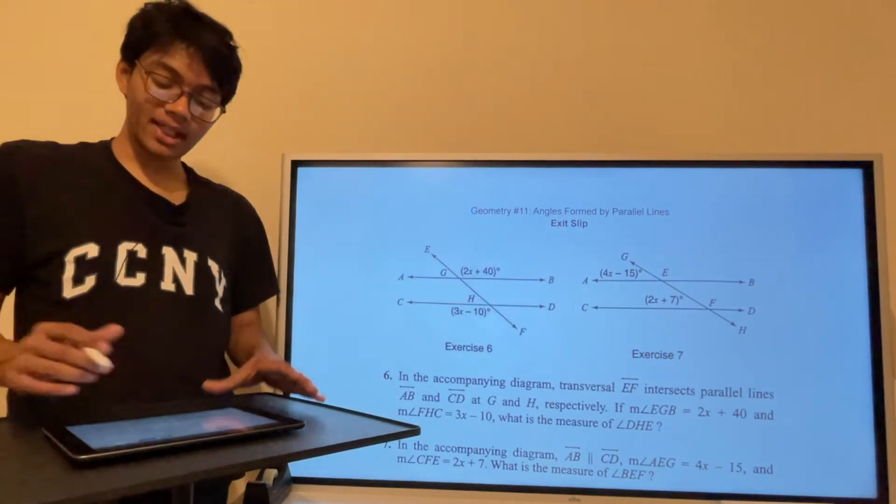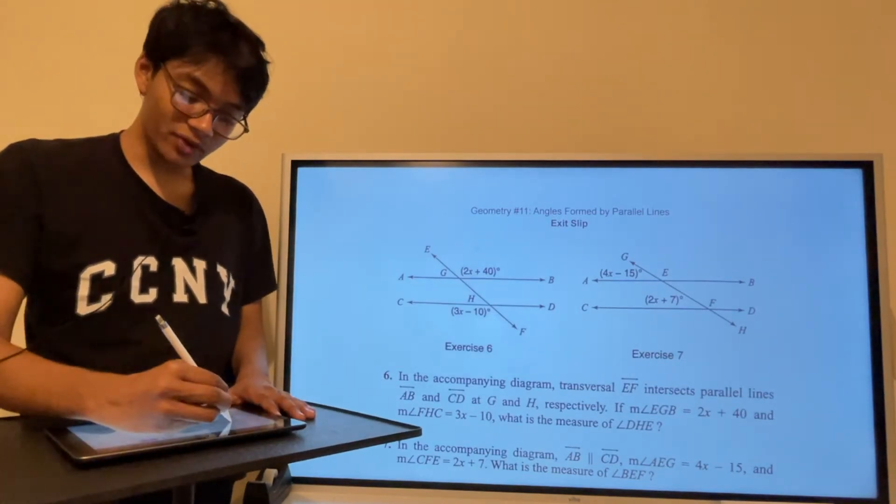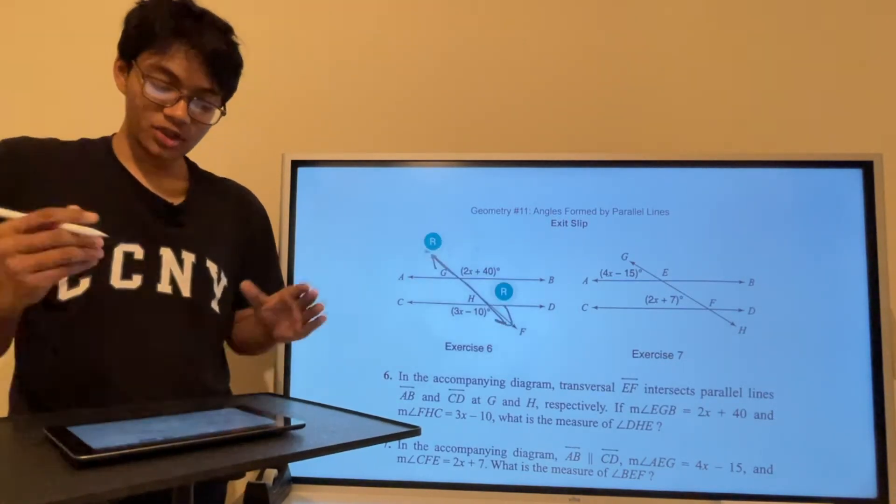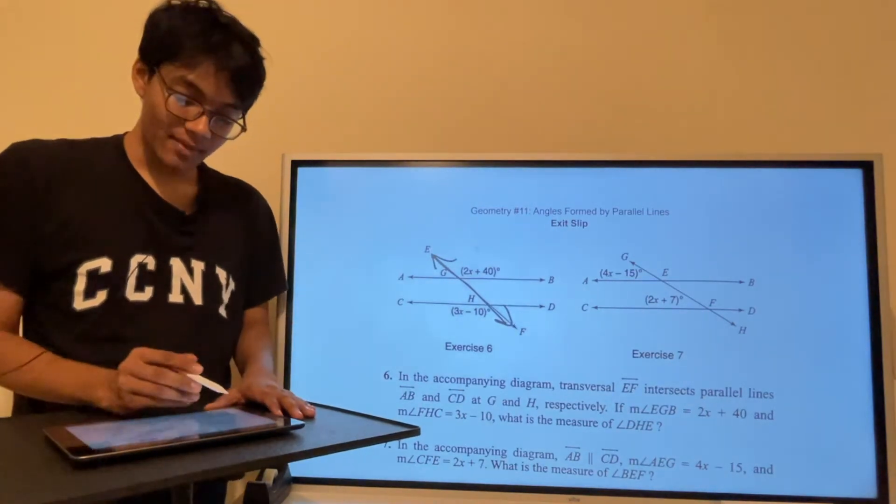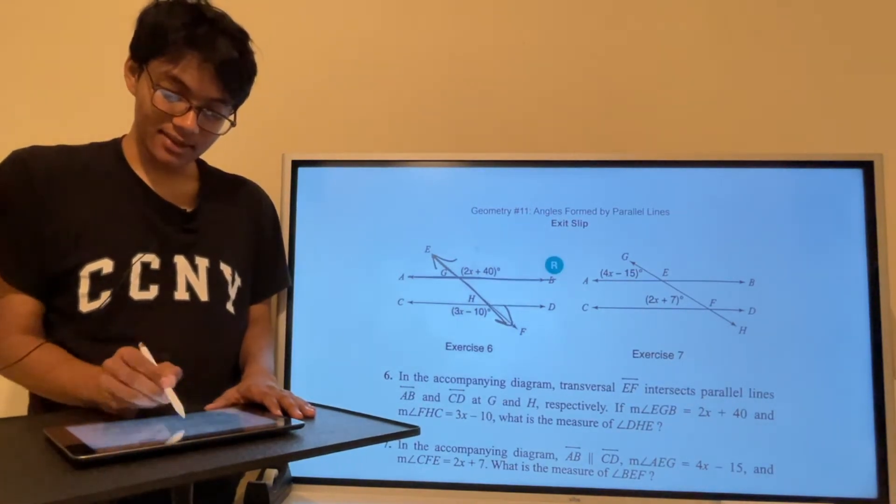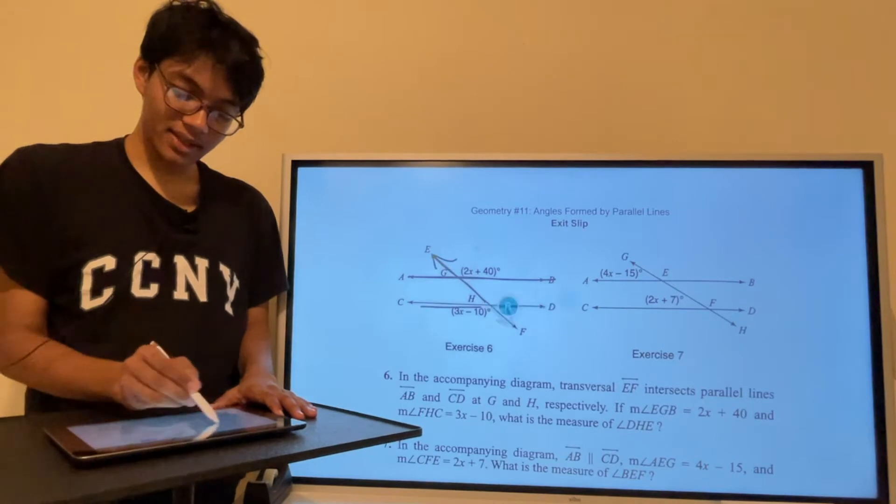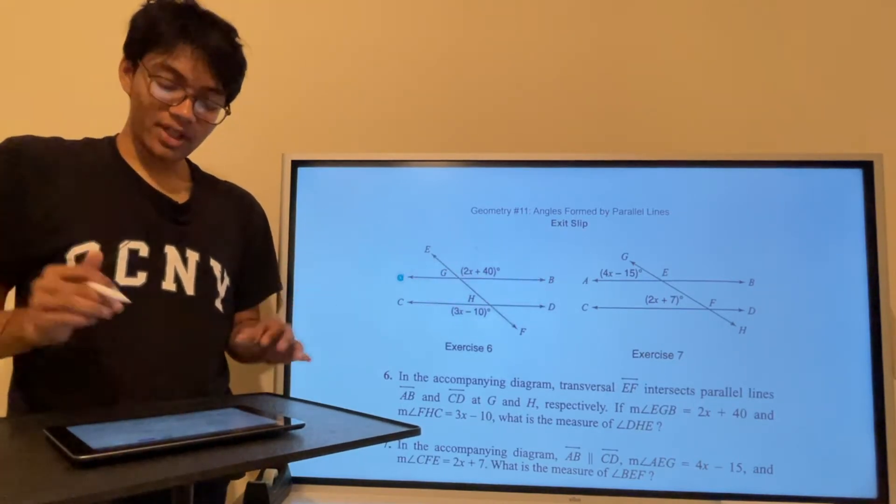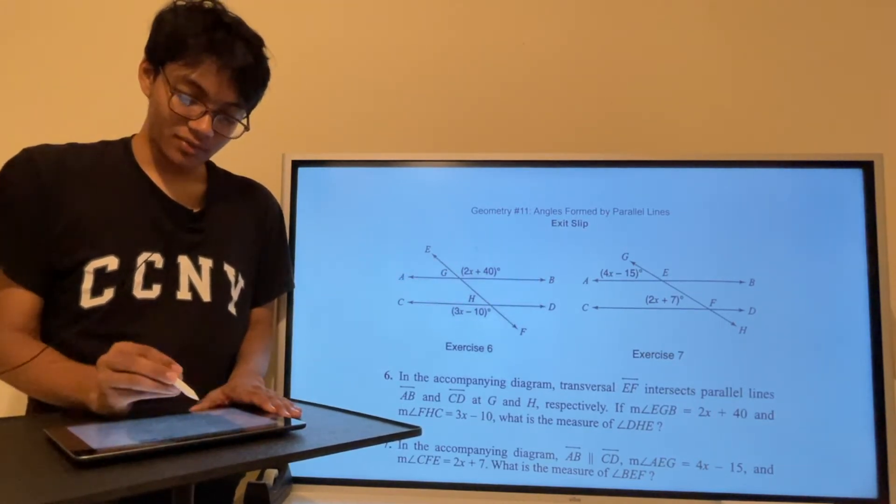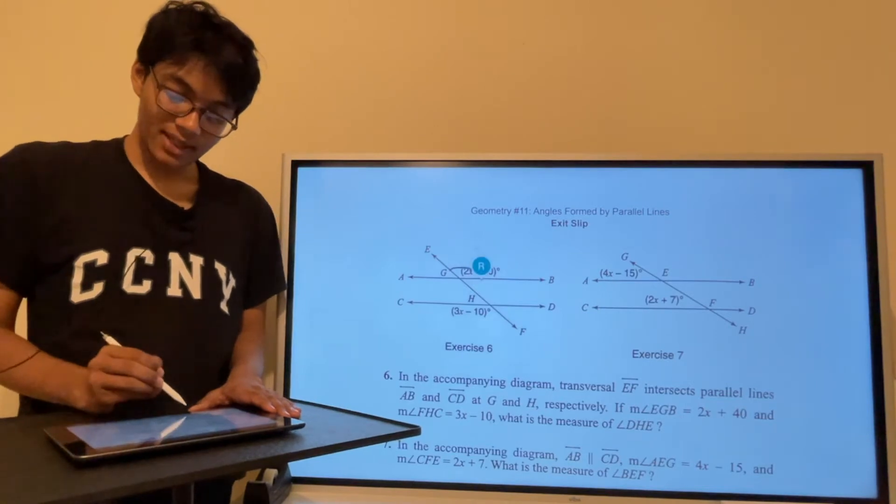The first question says in the accompanying diagram, transversal EF, which is this line right here, intersects parallel lines AB and CD. If the measure of angle EGB, which is this angle, is 2x plus 40,